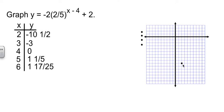So I'm going to plot my points. 3, negative 3. 4, 0. 5 gave me 1 and 1/5. 6 gave me 1 and 17/25. I'm going to measure very precisely and put it there.